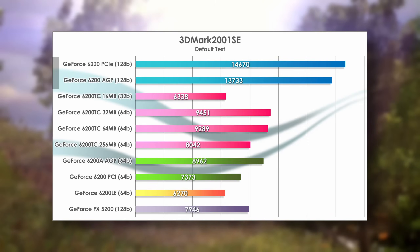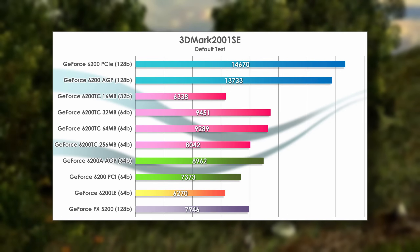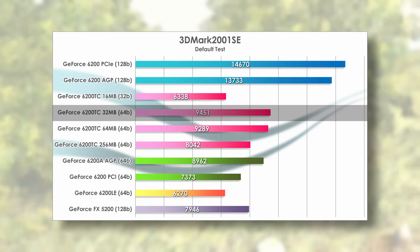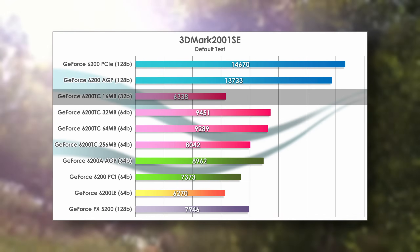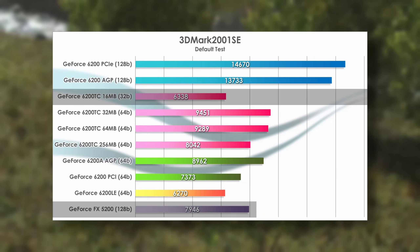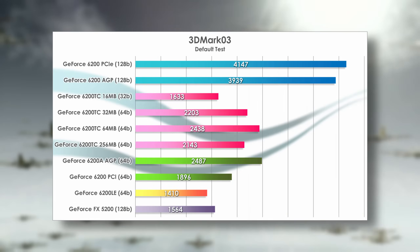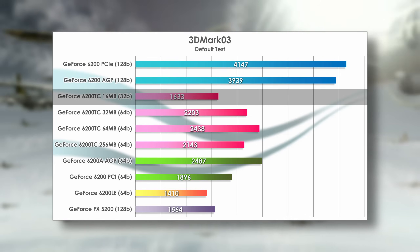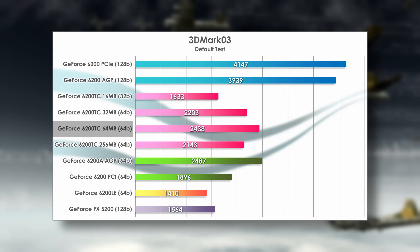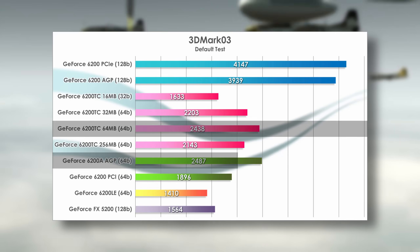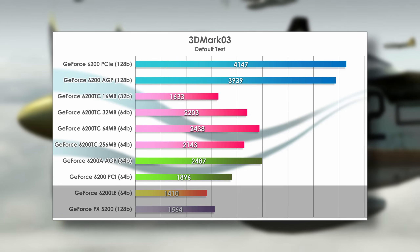Starting with 3DMark 2001, the 128-bit cards unsurprisingly lead the pack — that will pretty much be the trend going forward. The 16MB Turbo Cache version falls way behind the others; the 32MB version is the fastest, thanks to its faster memory and full 64-bit bus, getting 49% more points than the 32-bit 16MB card. The PCI version is also faster than the 16MB, as is the GeForce FX 5200. In 3DMark 03, the 16MB card scores among the lowest, but manages to squeak ahead of the 6200 LE by 223 points, about 16%. The 64MB card scores the highest among Turbo Cache cards, about the same as the AGP 6200A, clearly able to leverage extra bandwidth over PCI Express, while the 256MB card does not.